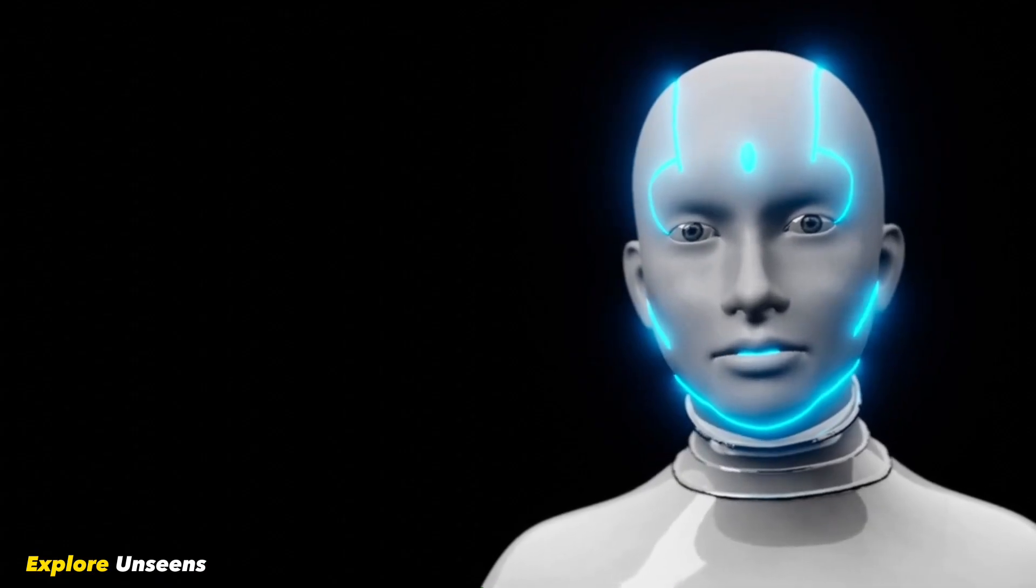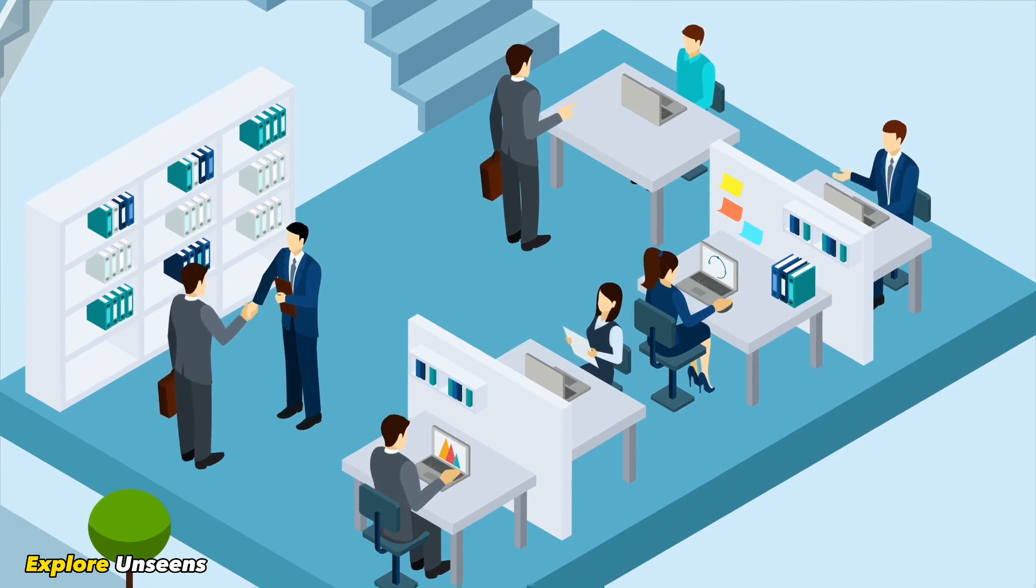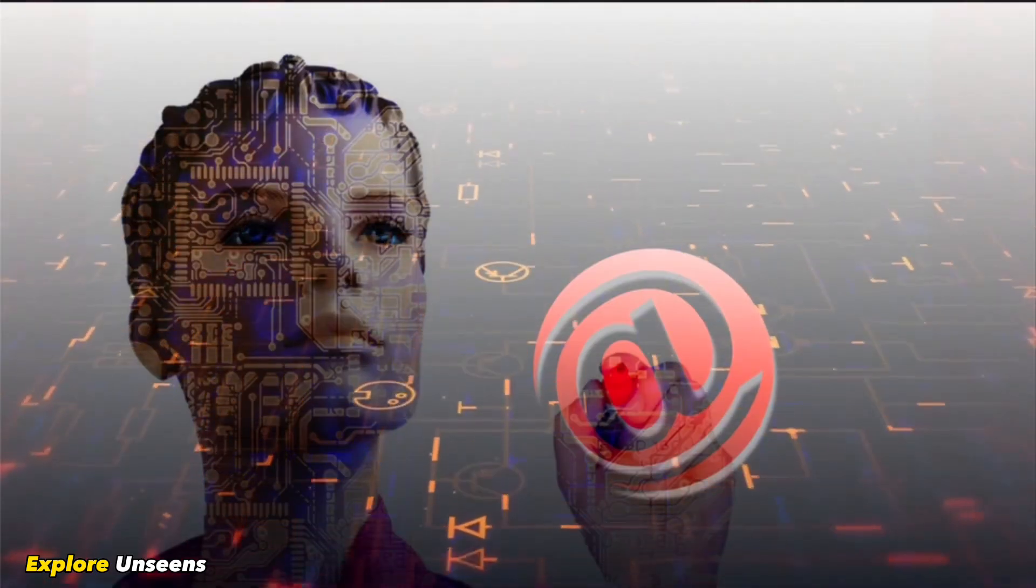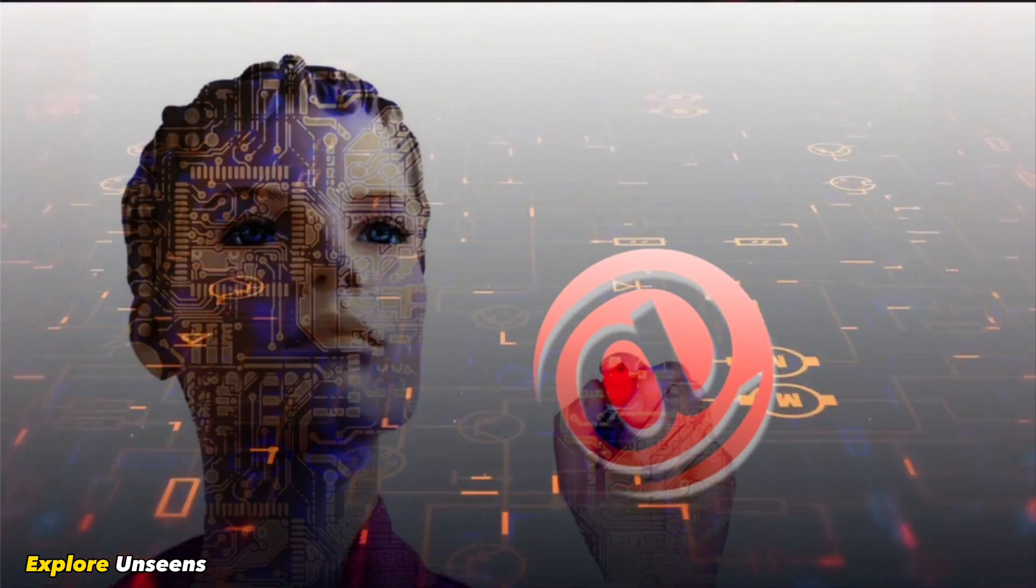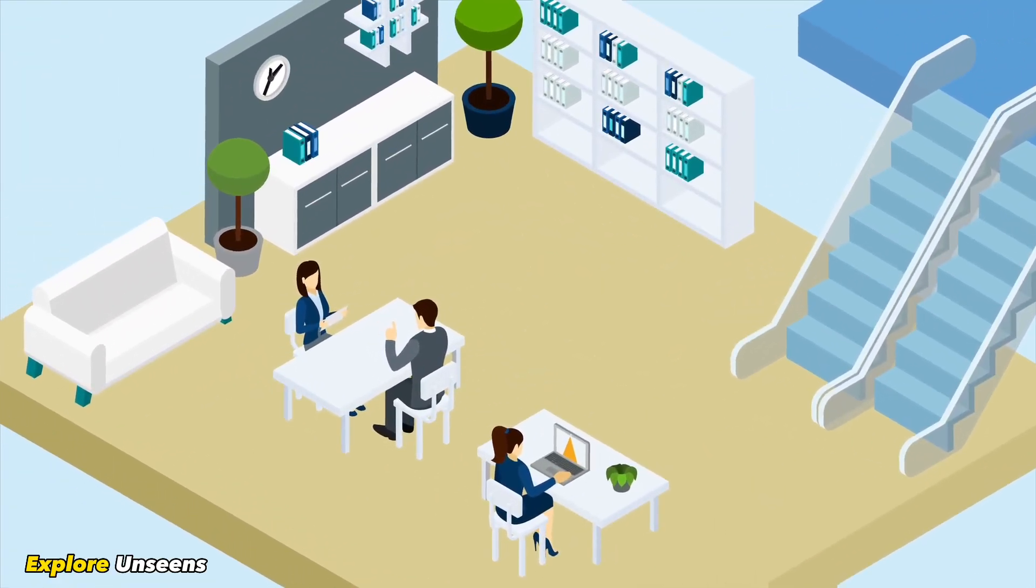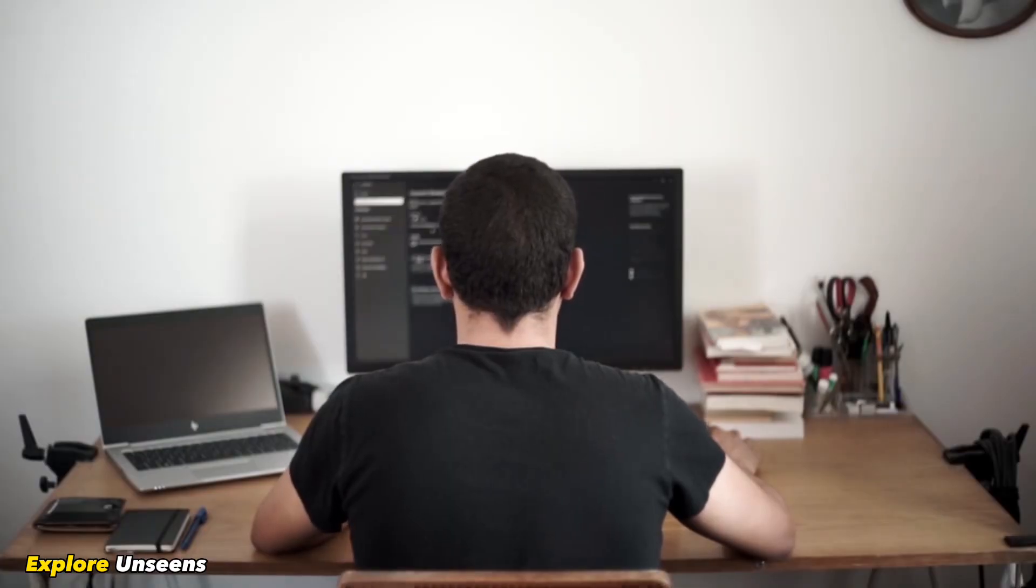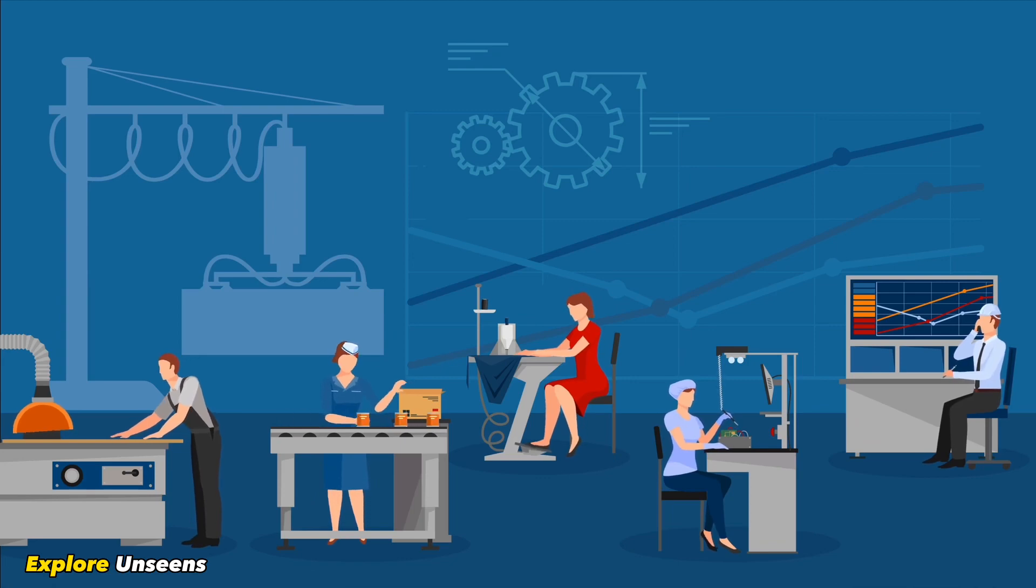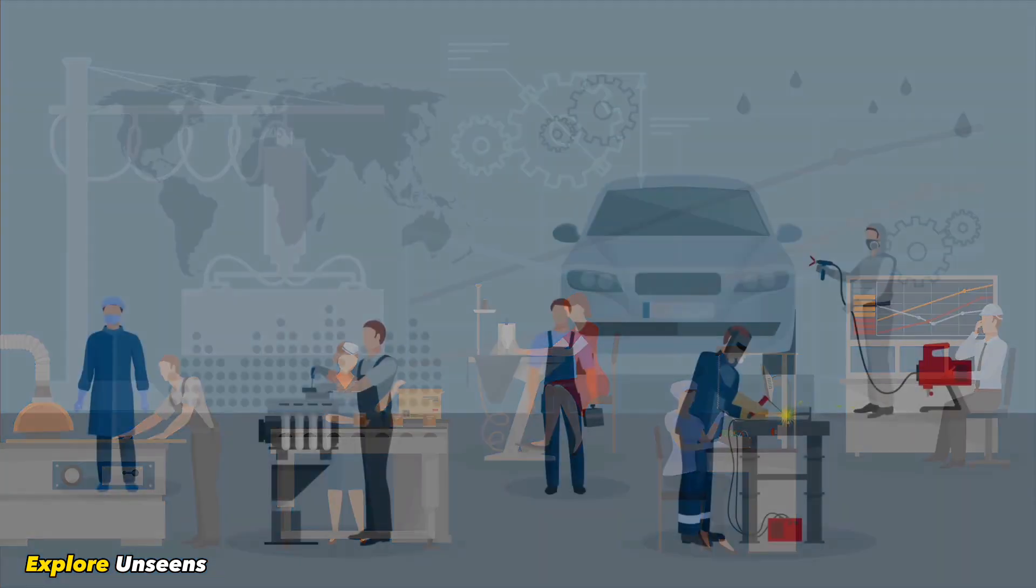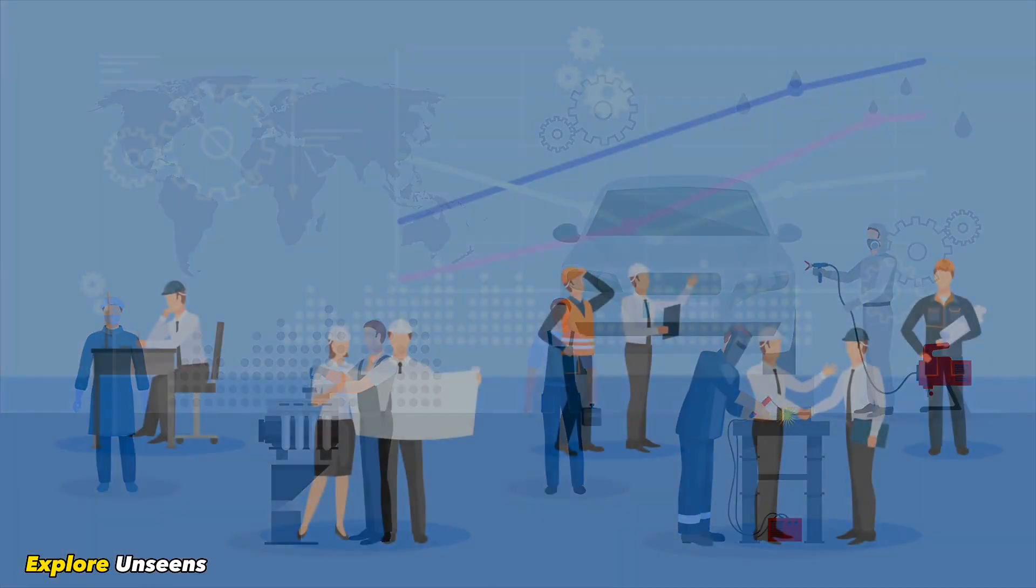As AI becomes more sophisticated, ethical considerations are crucial. We need to ensure that AI systems are transparent, unbiased, and accountable. Additionally, discussions around data privacy, security and the responsible use of AI are essential to avoid potential pitfalls. Striking the right balance between technological advancements and ethical frameworks is critical for a sustainable future.